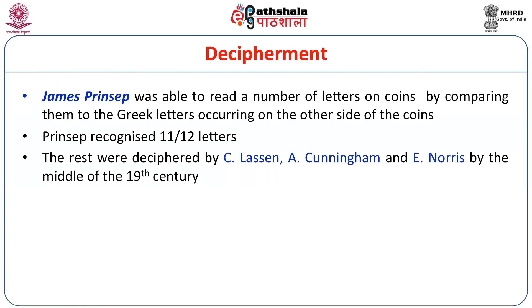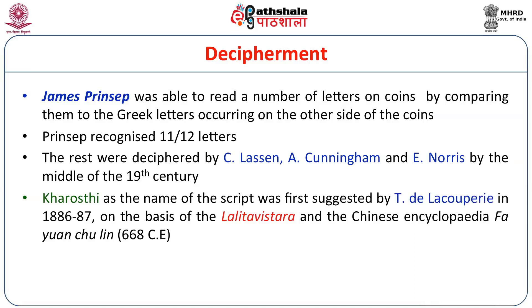That Kharosthi is the name of this specific script was first suggested by scholar Terence de Lacouperie in 1886–1887 on the basis of the Lalitavistara. The Lalitavistara is a text in Buddhist Hybrid Sanskrit belonging to the 3rd century CE. The name also occurs in the Chinese encyclopedia Fa Yuan Zhu Lin in the 7th century. In the Lalitavistara, a list of 64 scripts places Brahmi and Kharosthi at numbers 1 and 2, indicating they were the most important scripts of early India.